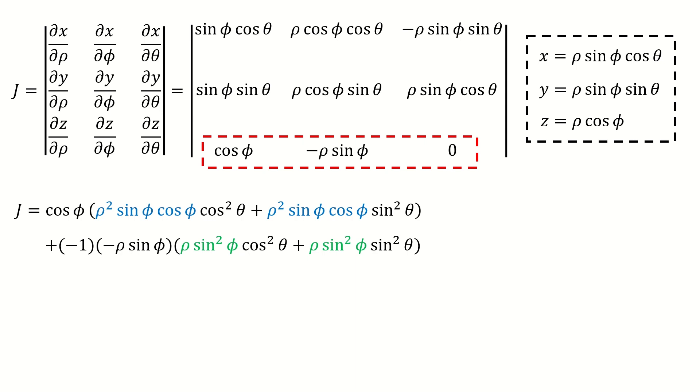Note for the blue term, we can factor it out, then we got cosine squared plus sine squared, which is equal to 1. Similarly, for the green term, we can factor it out, and also we got cosine squared plus sine squared, which is equal to 1. So we can simplify it to here. Then we take out the parentheses, we got here.